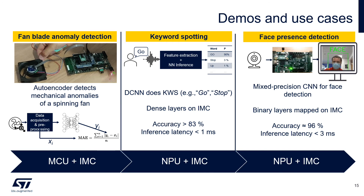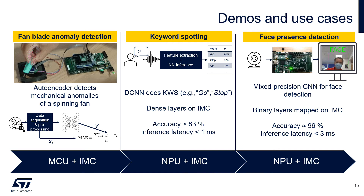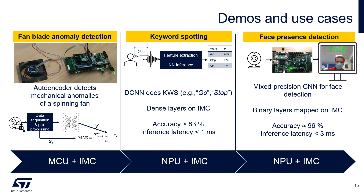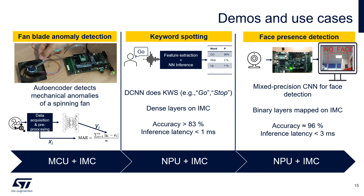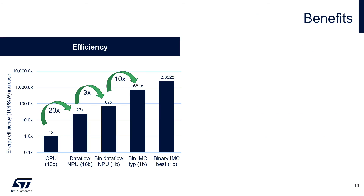Additional use cases include keyword spotting, which uses a mix of NPU and IMC because some kernels, depending on precision, cannot be fully binarized and are handled by the NPU. Face-presence detection is also supported using a combined NPU and IMC mapping.